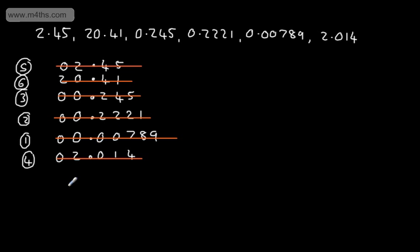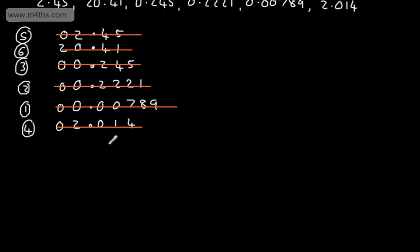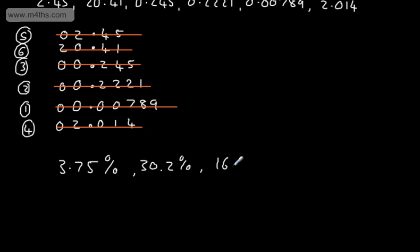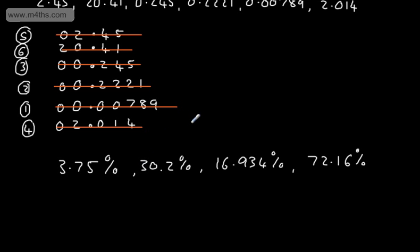Ordering percentages is very similar. All we're considering is that the highest percentage is going to be 100%. So, for example, if we had 3.75%, 30.2%, 16.934%, and 72.16%, we would simply list them out and, using a similar method, consider which has the highest value in the tens, then the units, then the tenths, and so on and so forth.